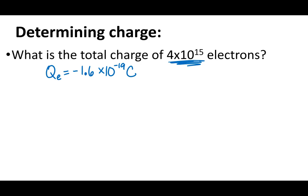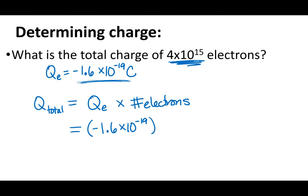So how do we figure out the total? Well, if we had one of them, the answer would be this. If we had two of them, it would be this number times 2. If we had 100 of them, it would be this number times 100. So in other words, the total charge is equal to the charge of one electron times the number of electrons. So one electron is negative 1.6 times 10 to the negative 19, and we have not 2, 10 or 100, but 4 times 10 to the 15 electrons. We multiply these two things together and we get our total charge.